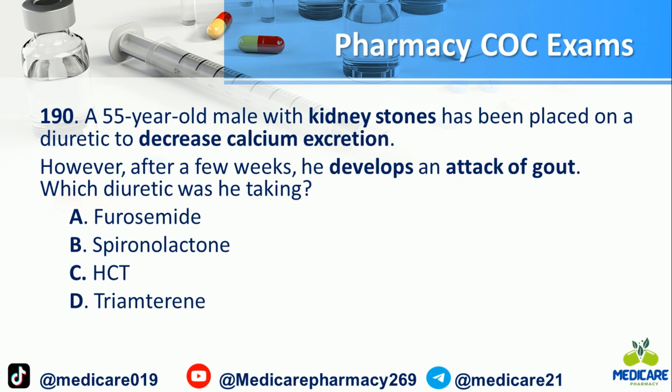Number 190: A 55-year-old male with kidney stones has been placed on a diuretic to decrease calcium excretion. However, after a few weeks, he develops an attack of gout. Which diuretic was he taking? A) Furosemide. B) Spironolactone. C) HCT. D) Triamterene. The answer is C.